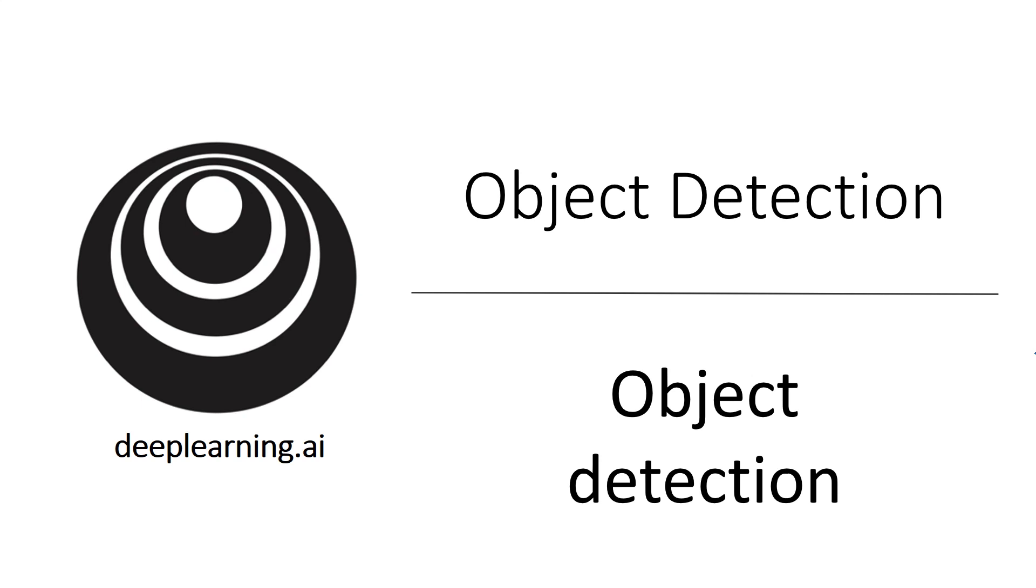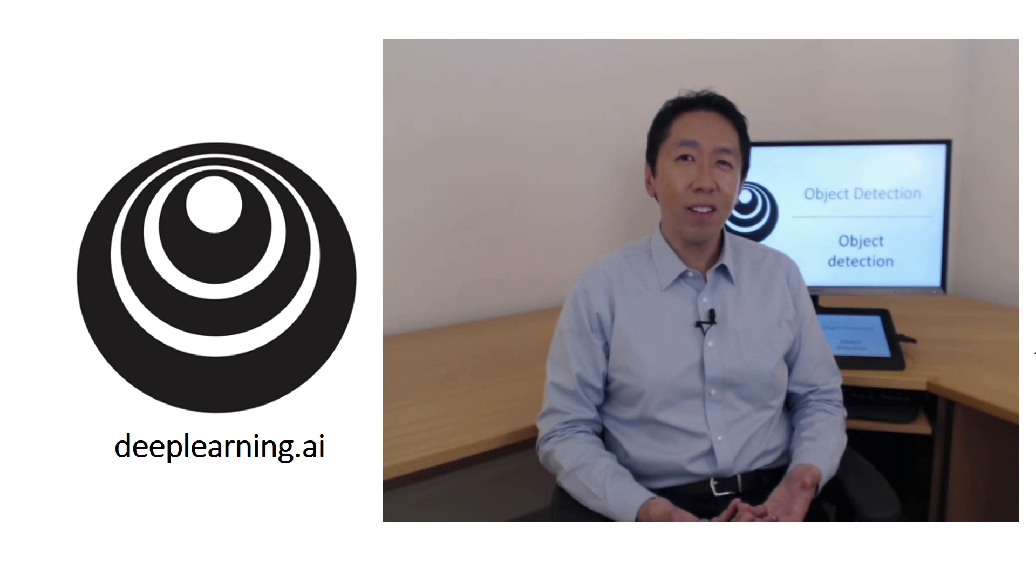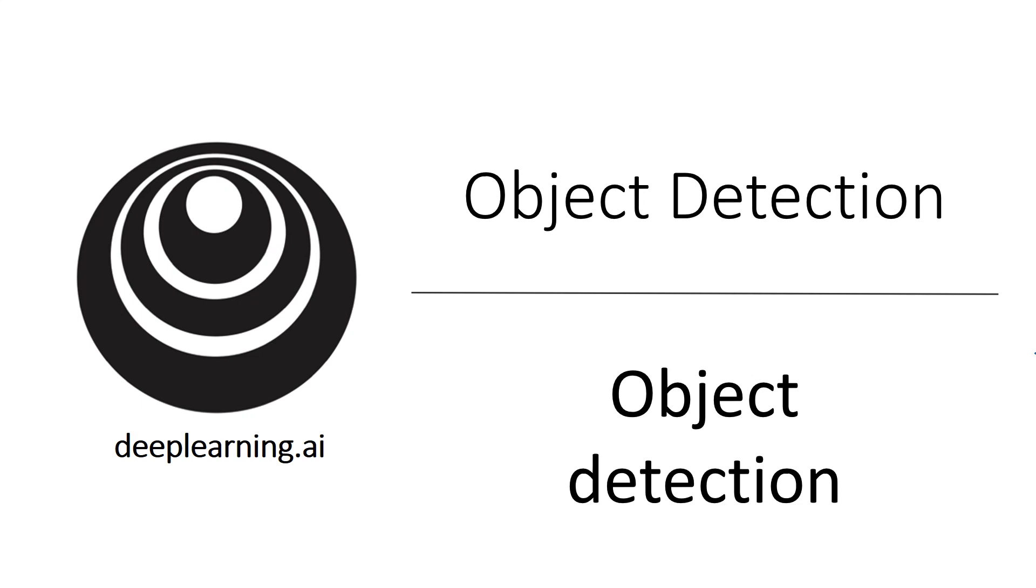You've learned about object localization as well as landmark detection. Now, let's build up toward an object detection algorithm. In this video, you'll learn how to use a ConvNet to perform object detection using something called the sliding windows detection algorithm.